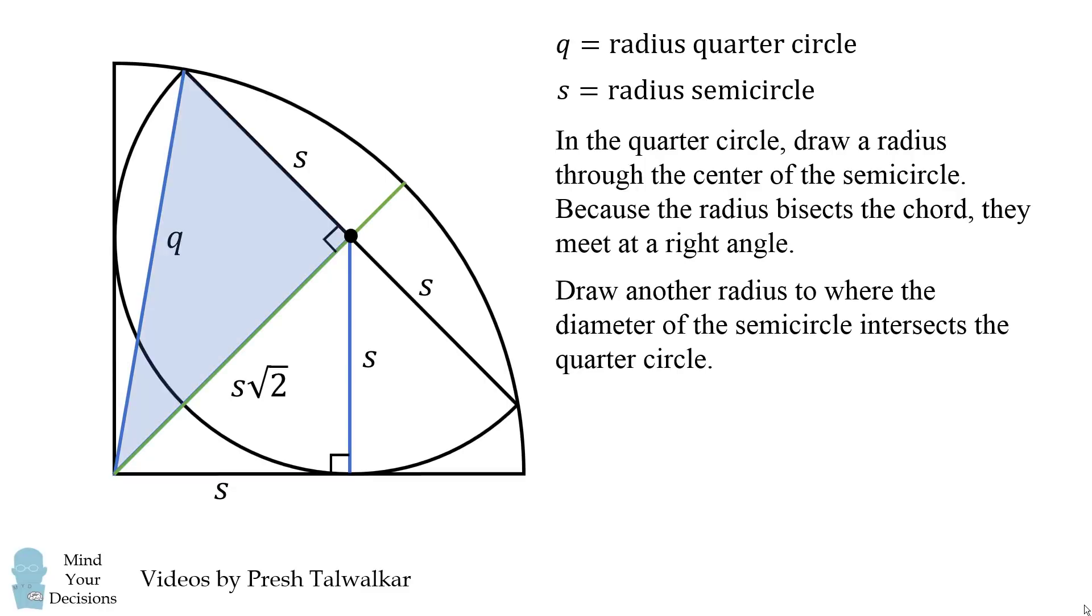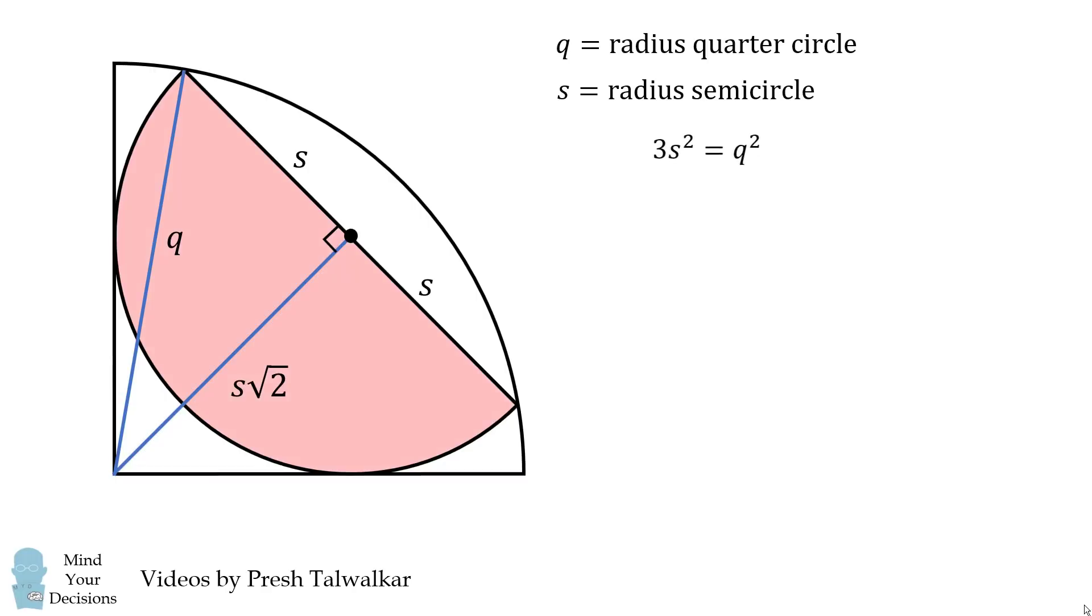Now we can notice there's a right triangle here, and we can use the Pythagorean theorem. So we have (s√2)² + s² = q². This simplifies to 3s² = q². And that's the relationship we need to solve this problem.